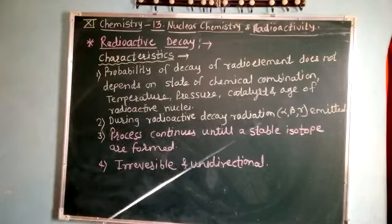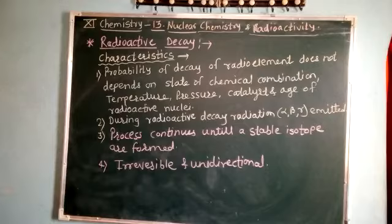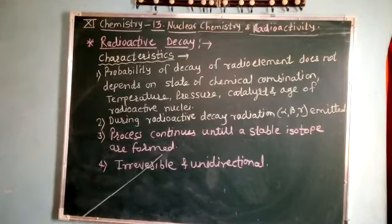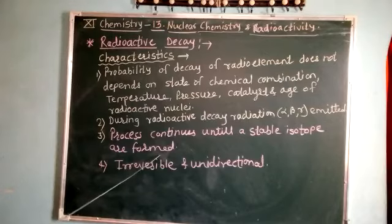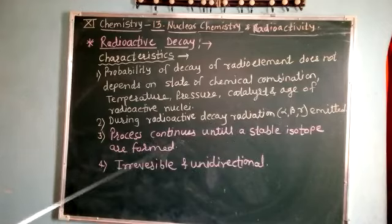During radioactive decay, radiations are emitted — alpha, beta, and gamma. When these particles are emitted, the unstable nucleus becomes more stable. This process continues until stable isotopes are formed, meaning decay continues as long as alpha, beta, or gamma particles are being emitted.